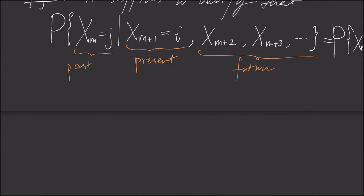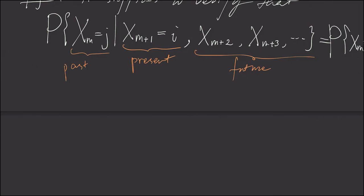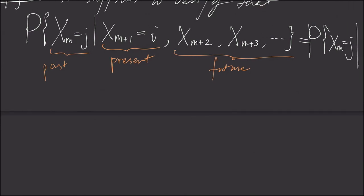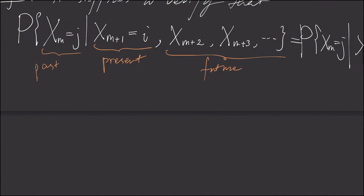Hi, this is a video addendum to the previous time reversible Markov chain video part 1. In this video we're going to prove the conditional distribution of the past given the present and the future is nothing but the past just given the present.